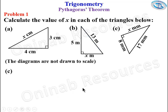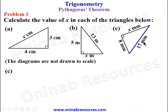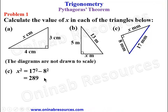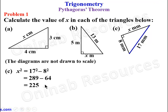We go to problem one C. The hypotenuse is the longest side here, which is 7 millimeters, and one of the other sides is unknown. X squared equals the square of the hypotenuse minus the square of the other side: 289 minus 64, giving 225. X is the square root of 225, which gives 15. We are done with problem one.